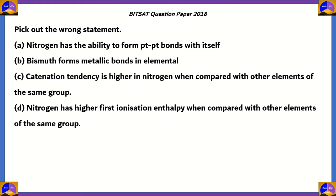The final question asks us to pick the wrong statement among the following: Statement 1 — nitrogen has the ability to form pπ–pπ bonds with itself. Statement 2 — bismuth forms metallic bonds in its elemental form. Statement 3 — catenation tendency is higher in nitrogen compared to other elements of the same group. Statement 4 — nitrogen has higher first ionization enthalpy compared to other elements of the same group.